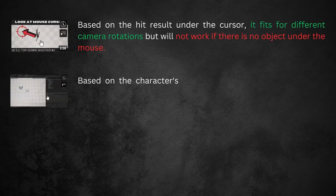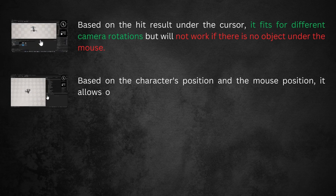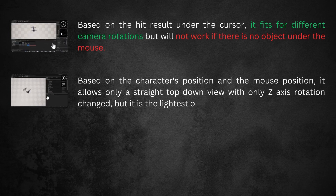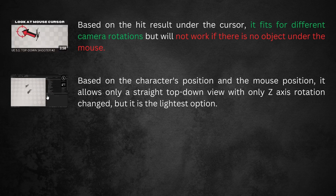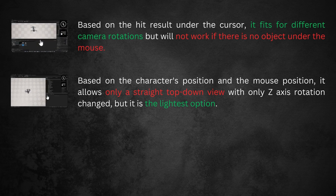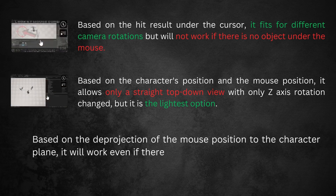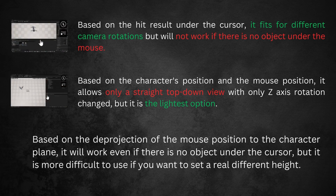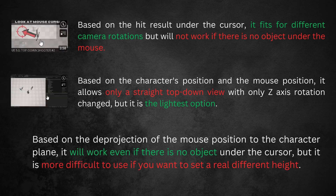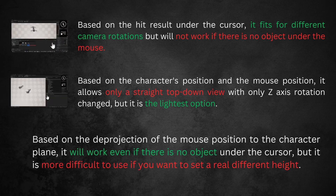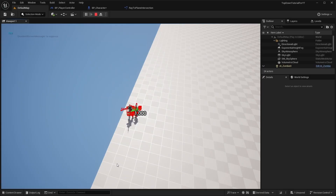The second one is based on a character position and mouse position on the screen. It allows only a straight top-down view, but it's the lightest option. The third is based on projecting the mouse position to the character's plane. It will work even if there is no object under the cursor, but it will be more difficult to use if you want to set a real different height. If the current approach doesn't suit you, you can choose another one.